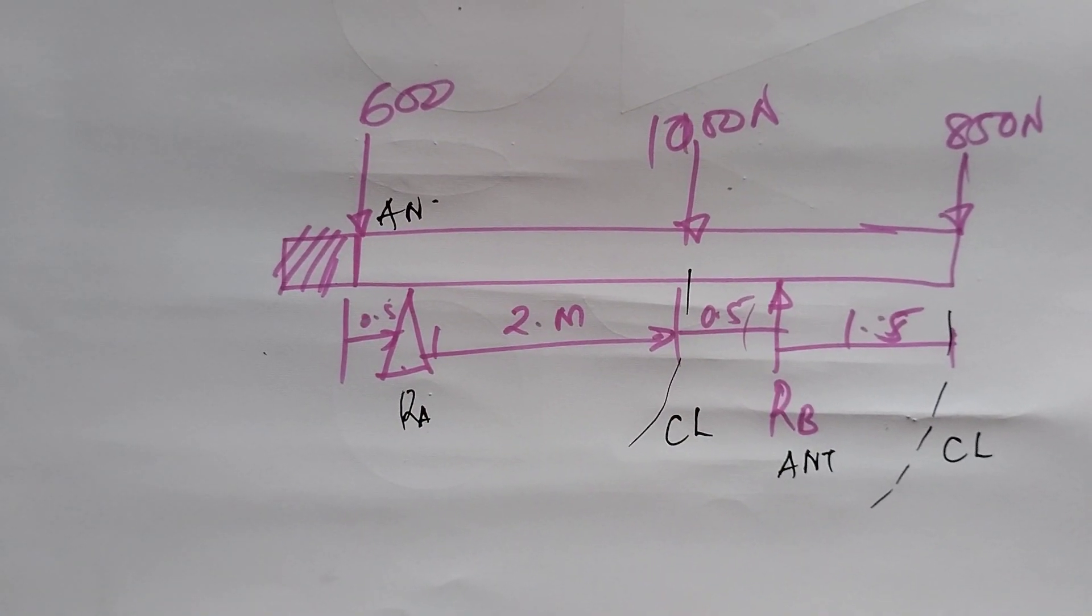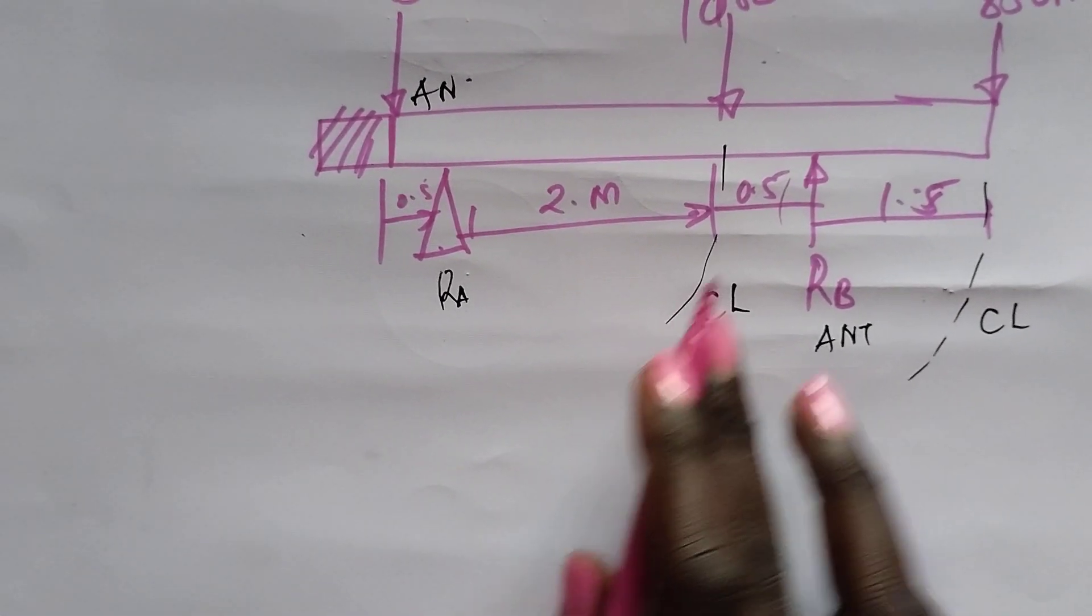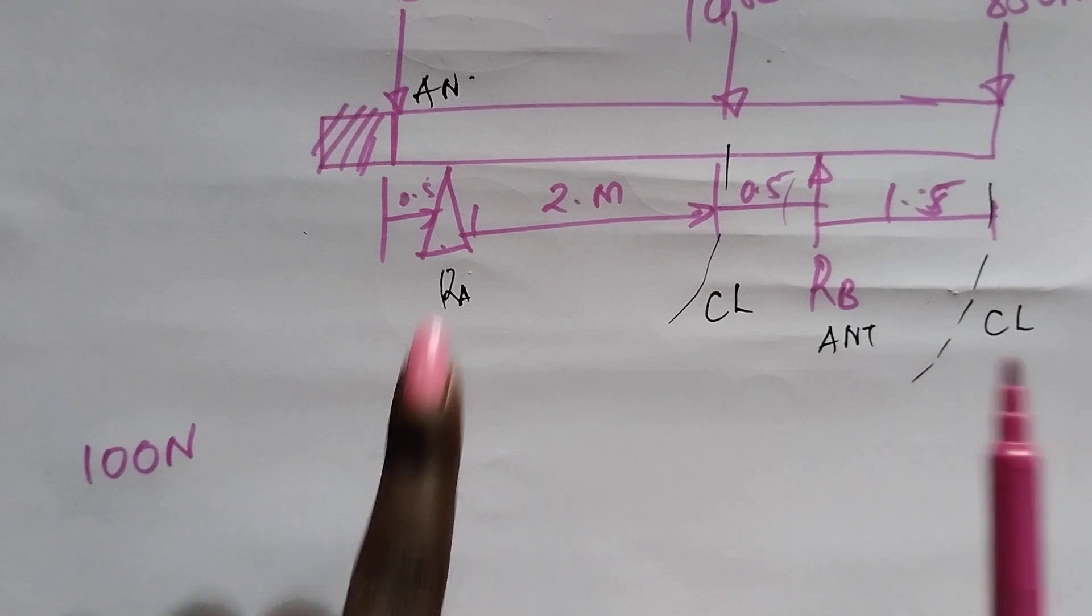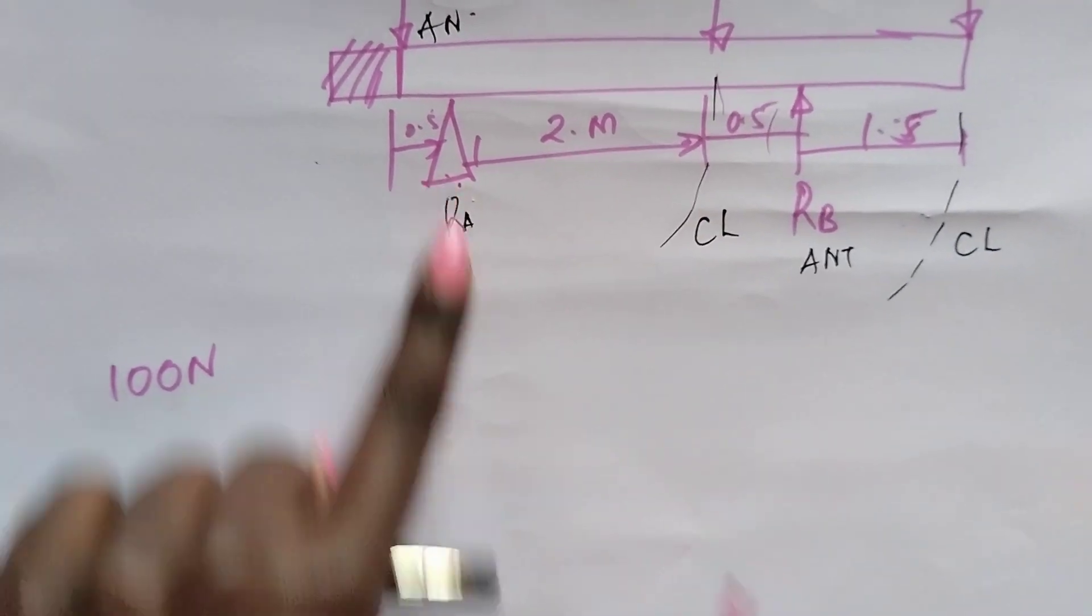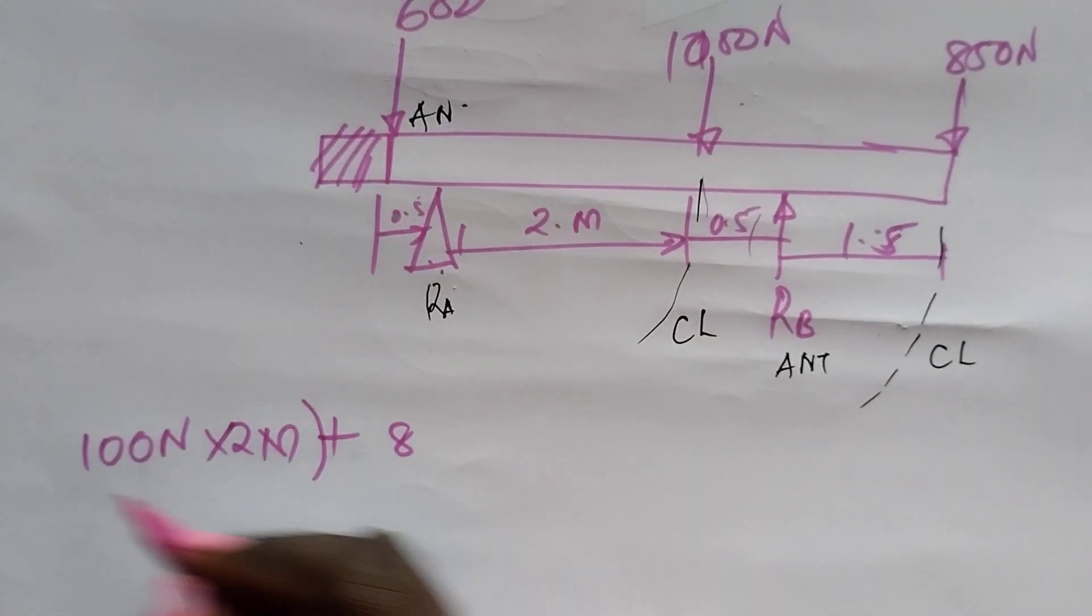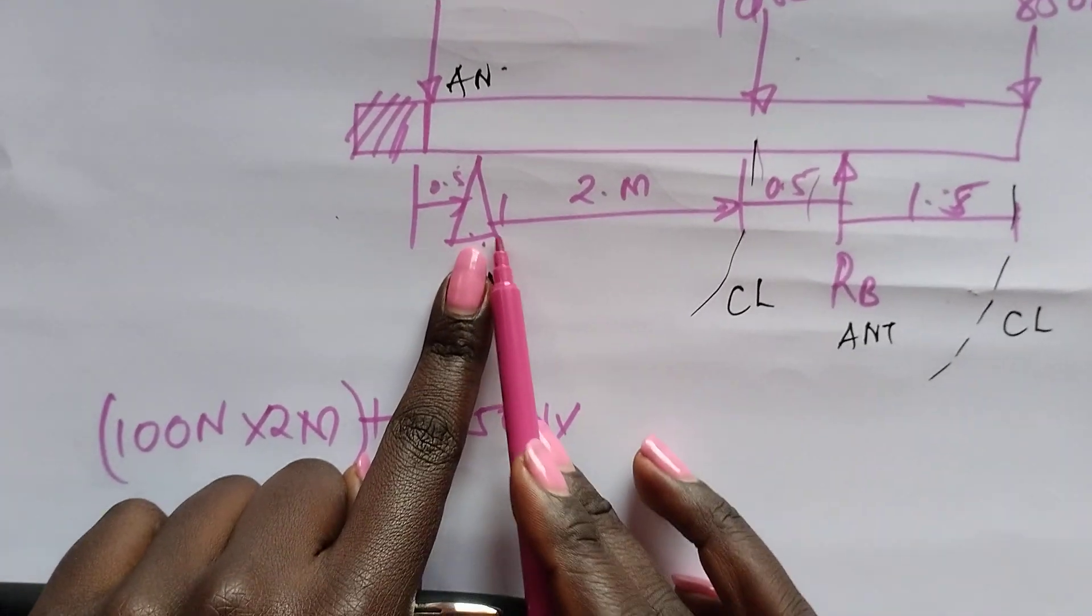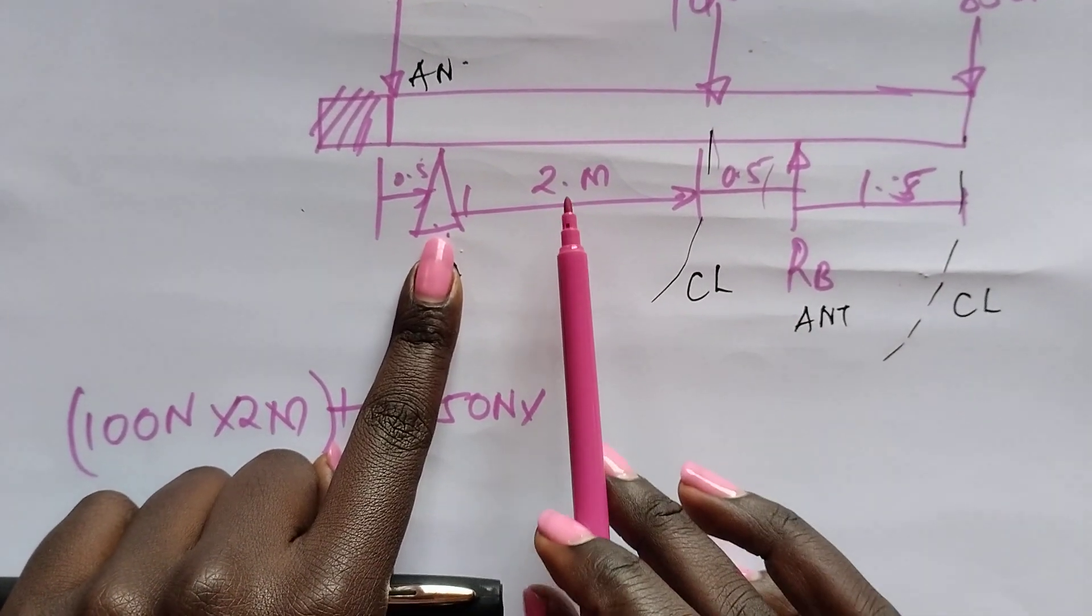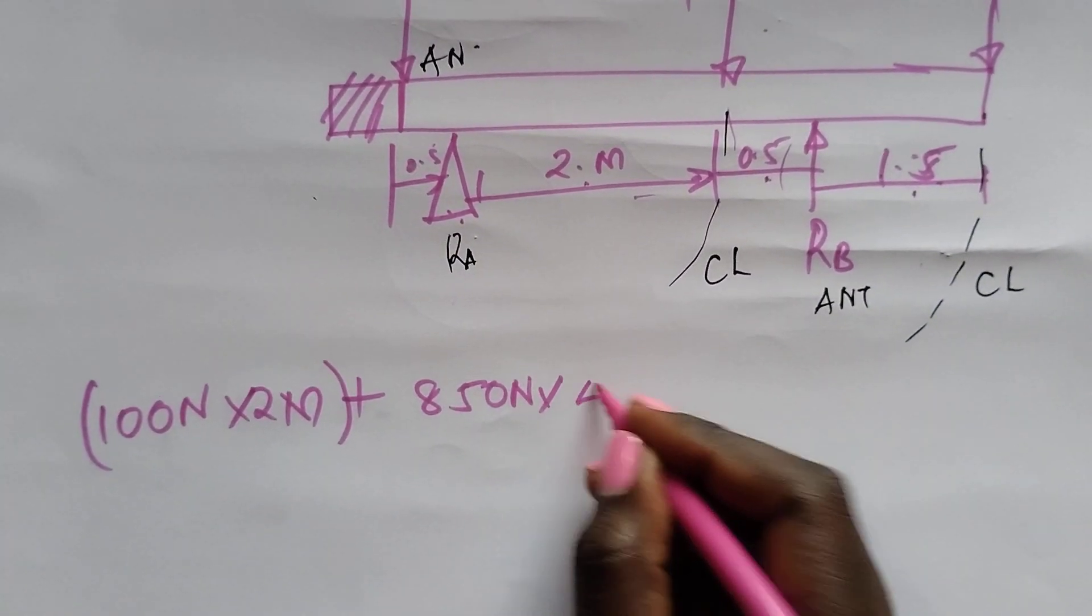From the law of moments that we said initially, we now have our clockwise moments, which is 1000 newtons times the distance. Remember, we said from the point of support, perpendicular from the point of support. So the distance from RA to 1000 newtons is 2 meters. So times 2 meters plus 850 newtons times the distance. So it will be the total distance from the point of support to where we are applying a force of 850. So this is 2 and 1.5 and 0.5, that simply gives us 4 meters.